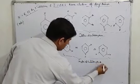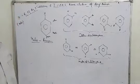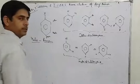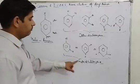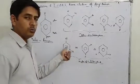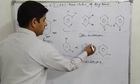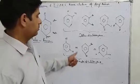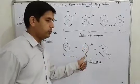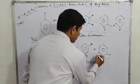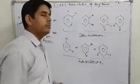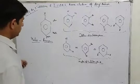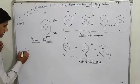These are examples of meta-dihalobenzene. If we have chlorine, it will be called meta-dichlorobenzene. If we have Br, it will be called meta-dibromobenzene. If we have iodine, it will be called meta-diiodobenzene.